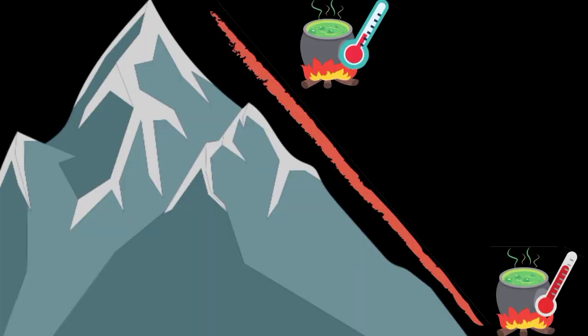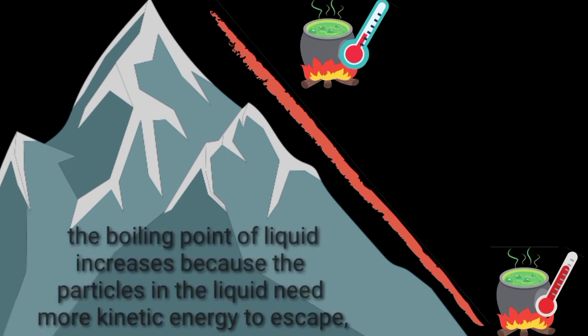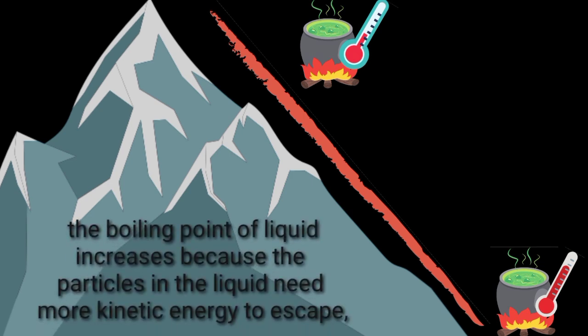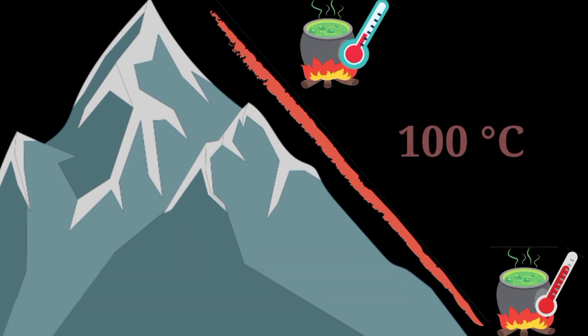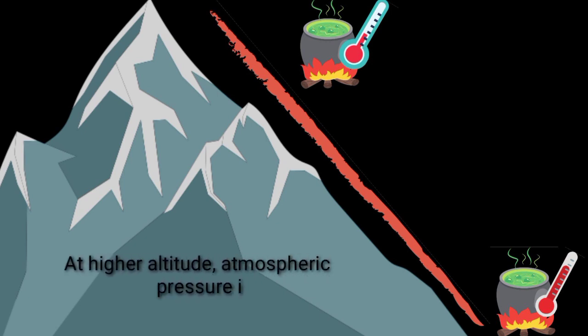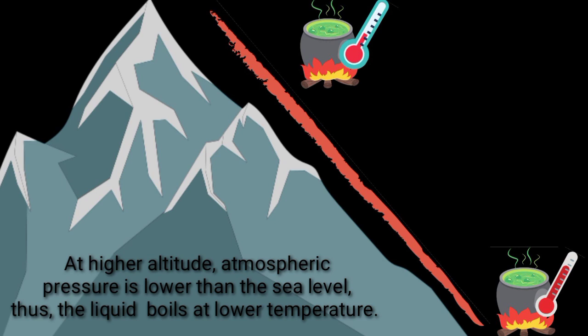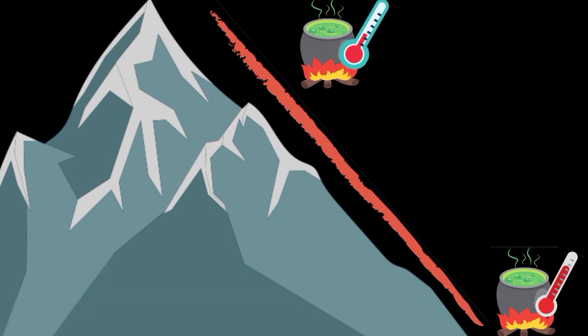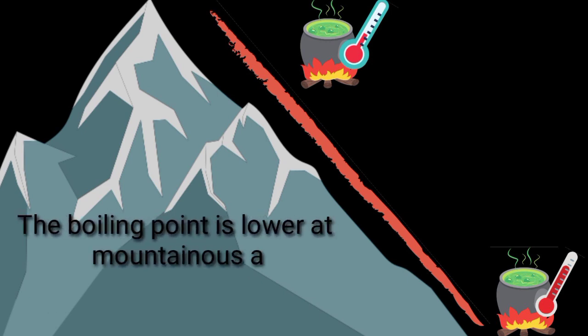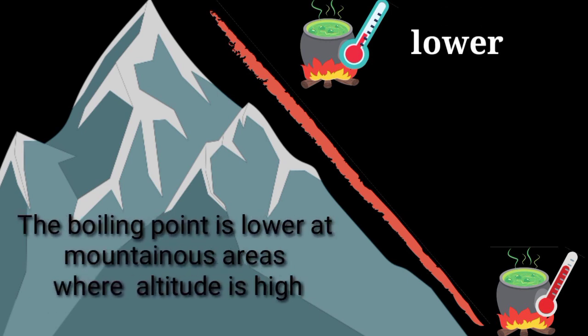At higher atmospheric pressure, the boiling point of a liquid increases because the particles in the liquid need more kinetic energy to escape. At high pressure, such as in a pressure cooker, water boils above 100 degrees Celsius. At higher altitude, atmospheric pressure is lower than at sea level, so the liquid boils at a lower temperature. The boiling point is lower in mountainous areas where altitude is high.